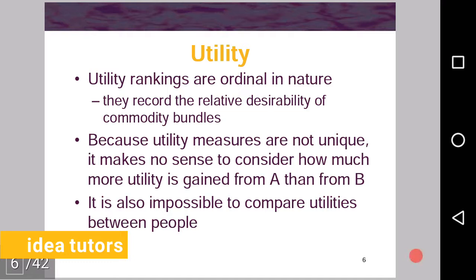Utility rankings are ordinal in nature. They record the relative desirability of commodity bundles, that how much desirable a bundle is as compared to the other bundle. Like if A and B are two bundles, then the rankings will tell how much A is preferred to B, how much desirable is A as compared to B, relatively desirable.